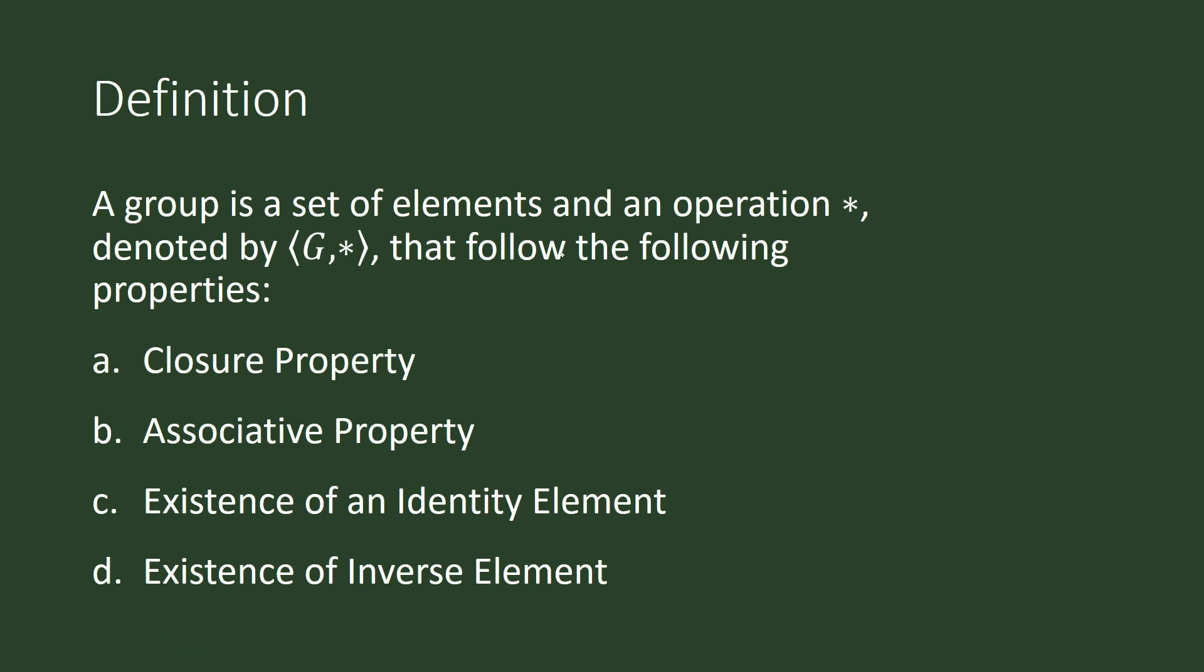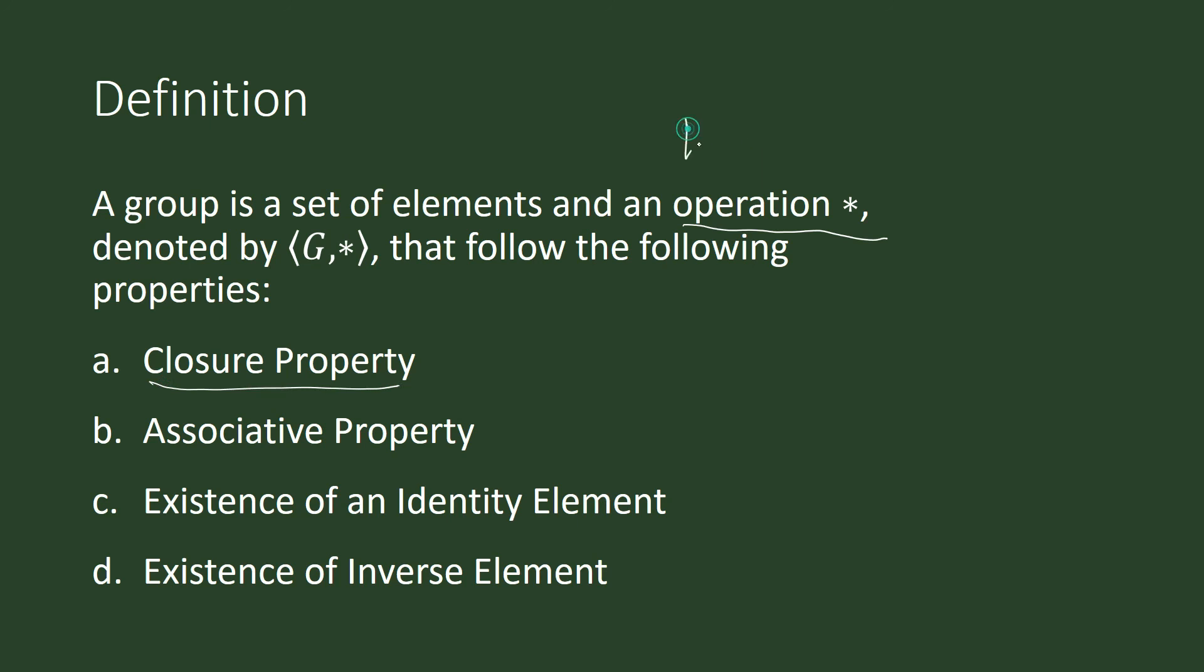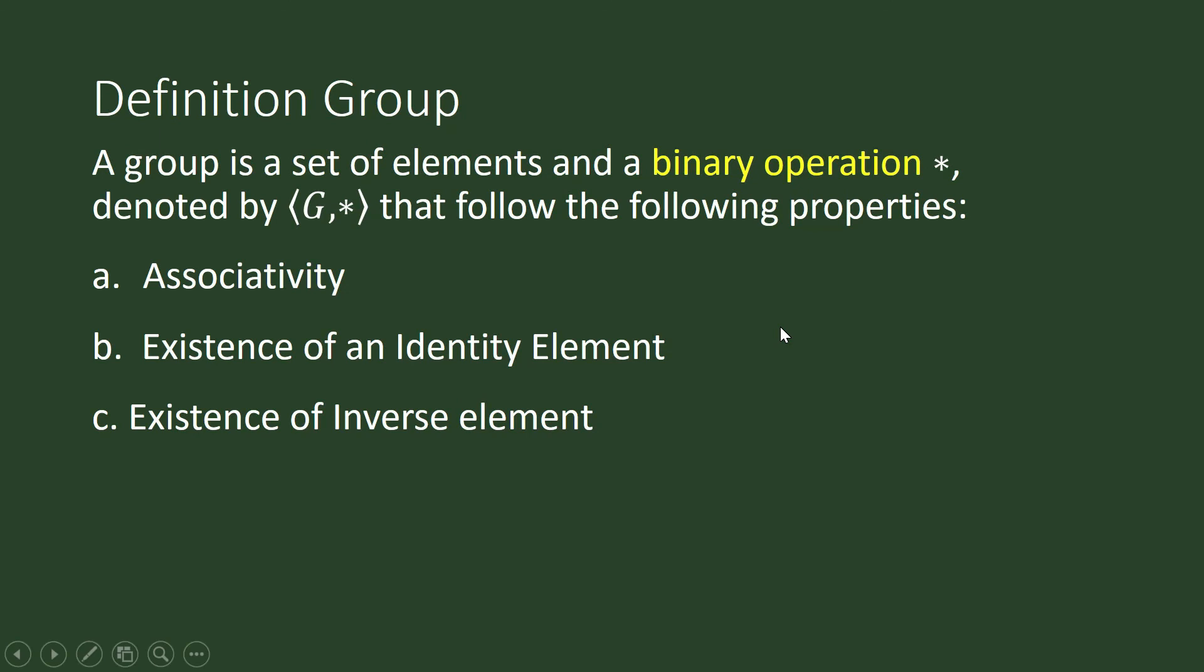Let us go back to the definition of a group. An operation, which is also closed or which follows the closure property, is what we call a binary operation. We spoke about binary operations many videos ago. So, what that means is we can replace this by the word binary operation and we can just delete this property. Because by definition, a binary operation is an operation that follows the closure property. So, in other books, they define a group in this way. It is a set of elements and a binary operation star that follow the following properties. Associativity, existence of an identity element, existence of an inverse element.